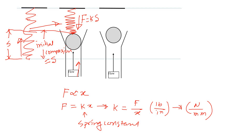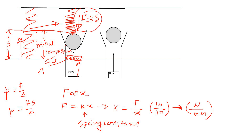If we know the cross-section area of the pipe blocked by the ball, let's call it A, we can calculate the pressure. Pressure equals force divided by area, or ks divided by A (P = ks/A). This pressure will just balance the spring force, which is why it's called cracking pressure.